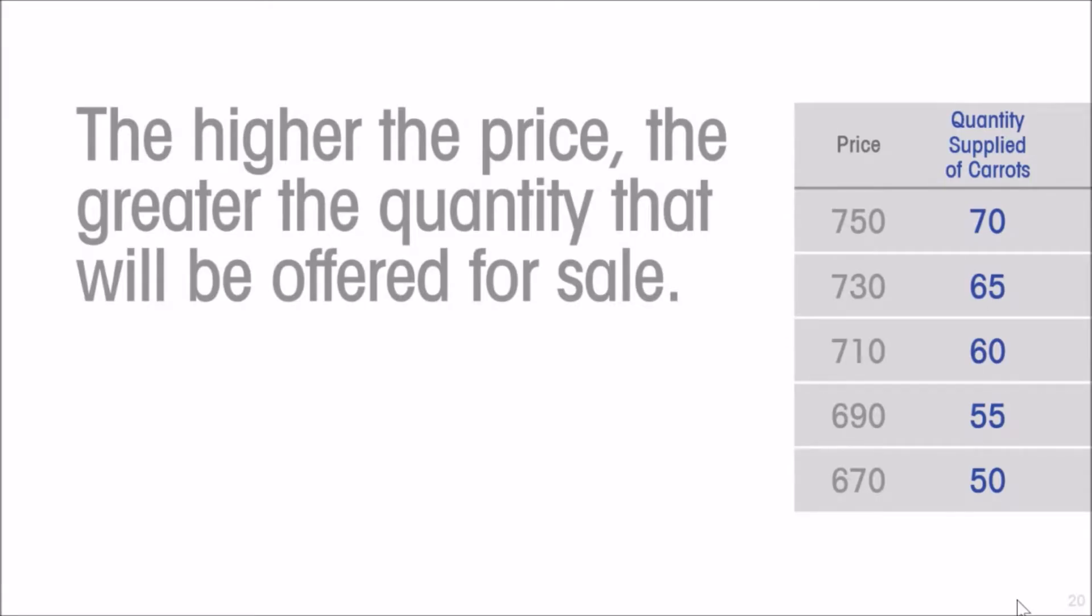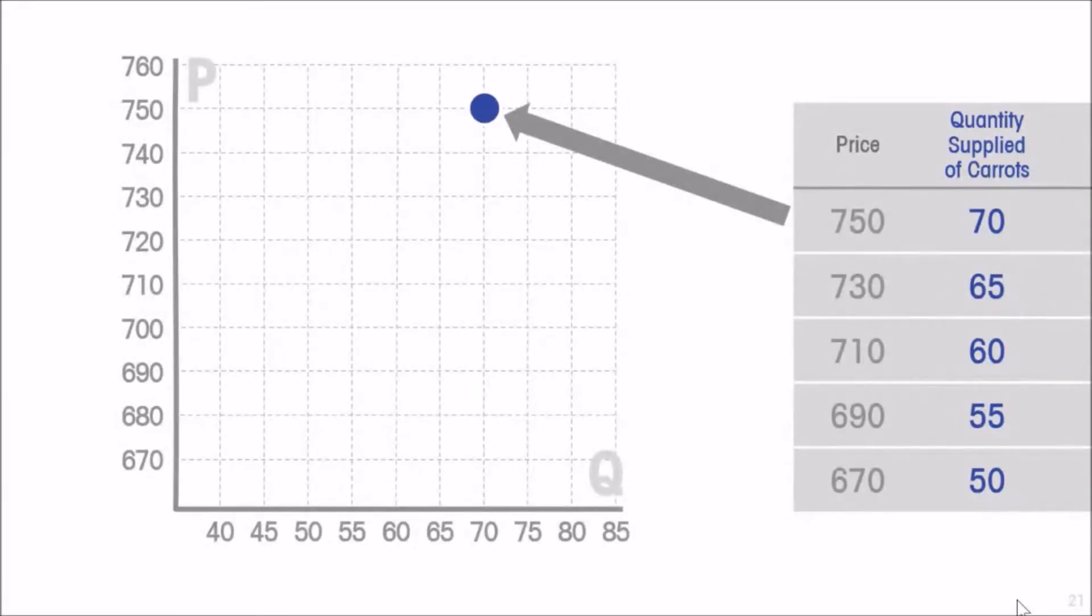Let us plot these points on a graph with price on the vertical axis and quantity on the horizontal axis. If we plot each of those points and connect them, we get the supply curve. The supply curve shows the relationship between price and quantities supplied. The table shows the same information that is on the graph. The same pairs show up on both the table and graph.